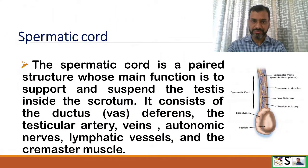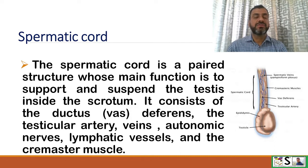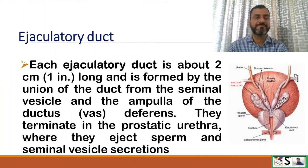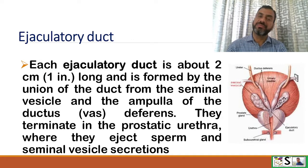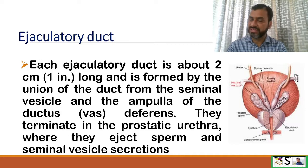The spermatic cord is a paired structure whose main function is to support and suspend the testes in the scrotum. It consists of the ductus deferens, testicular arteries and veins, autonomic nerves, lymphatic vessels, and the cremaster muscle. Each ejaculatory duct is about 2 cm long and is formed by the union of the duct from the seminal vesicle and the ampulla of the ductus deferens. They terminate at the prostatic urethra, where they eject sperm and seminal vesicle secretions.